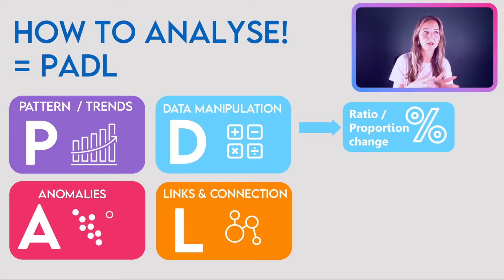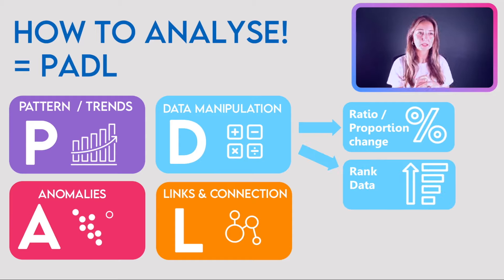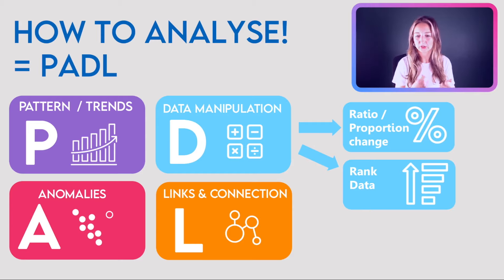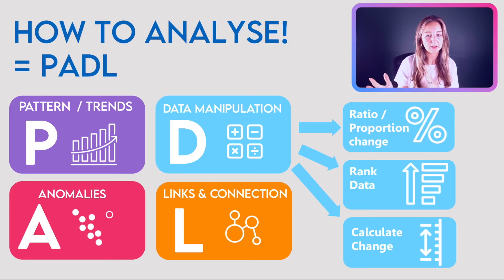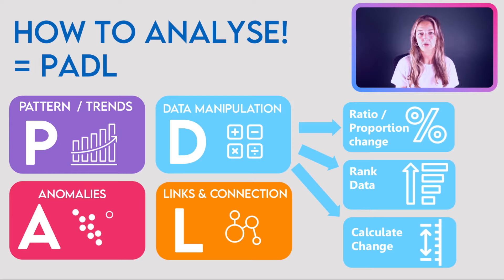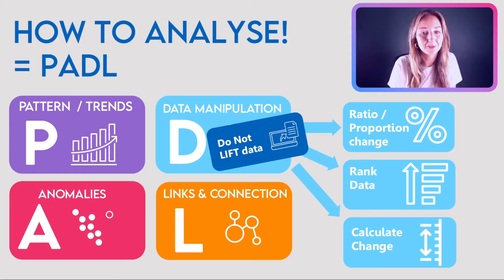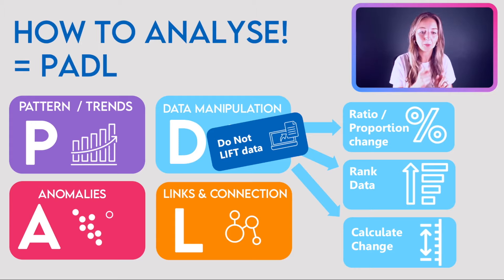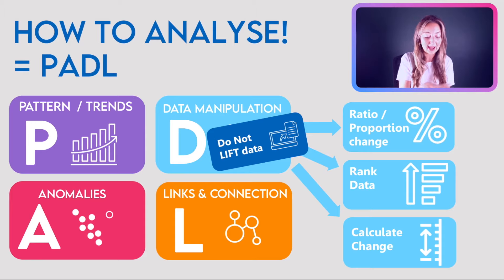Another useful technique is ranking the data — particularly helpful with a table. You can identify who's in the top three or bottom three, who's changed, who's largest or smallest. You can also calculate the change between two timescales or two places by simply working out the difference — it's not as sophisticated as a ratio but it's still doing something with the data. The most important thing is not to lift the data: examiners will literally write 'lift' in the margin, so they're really looking for you to do something with it.